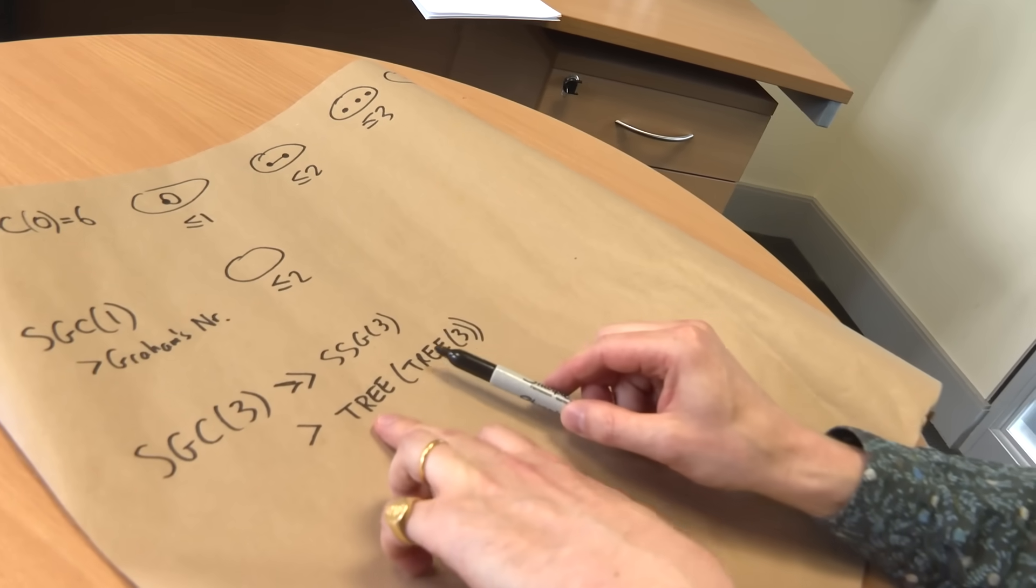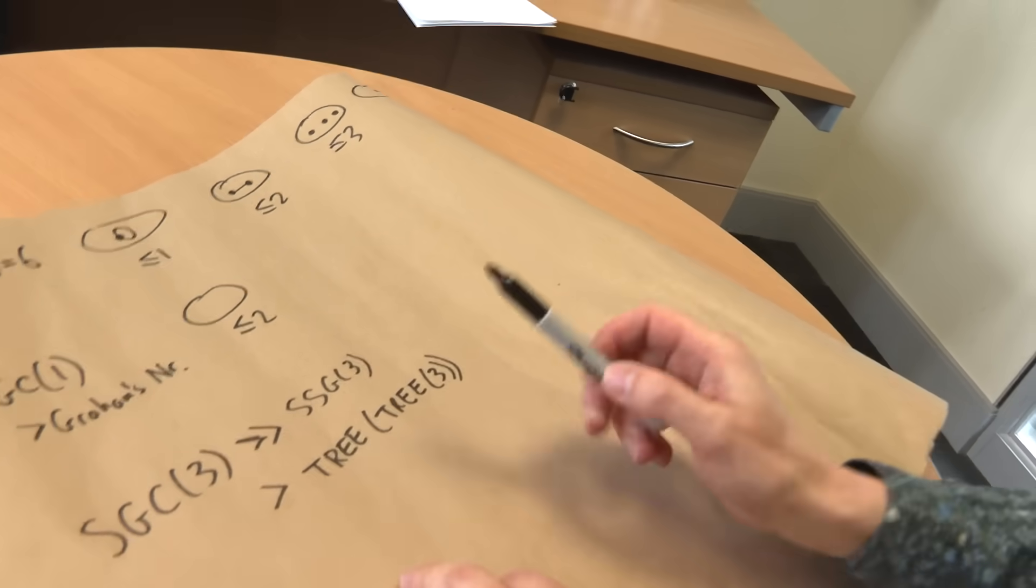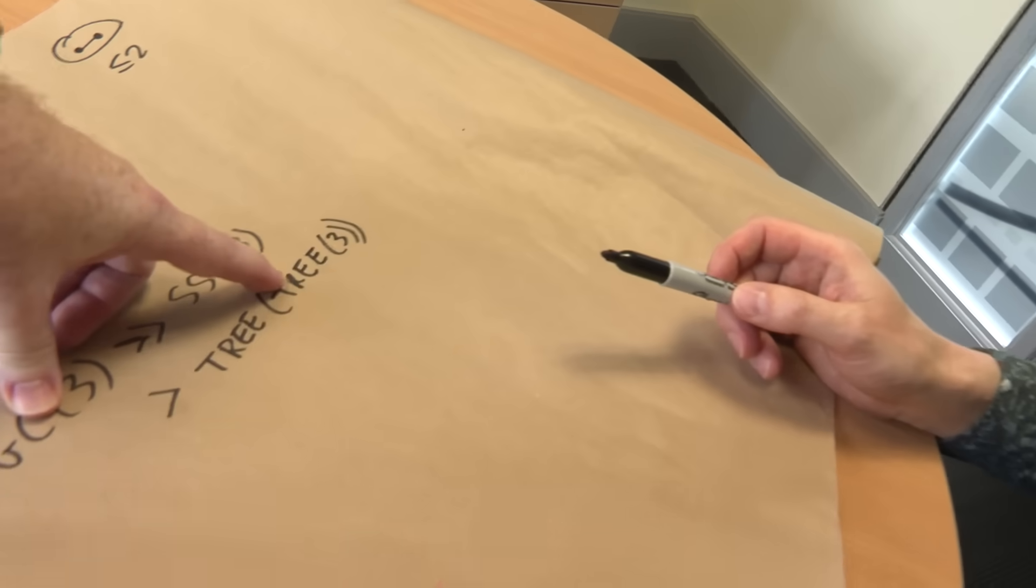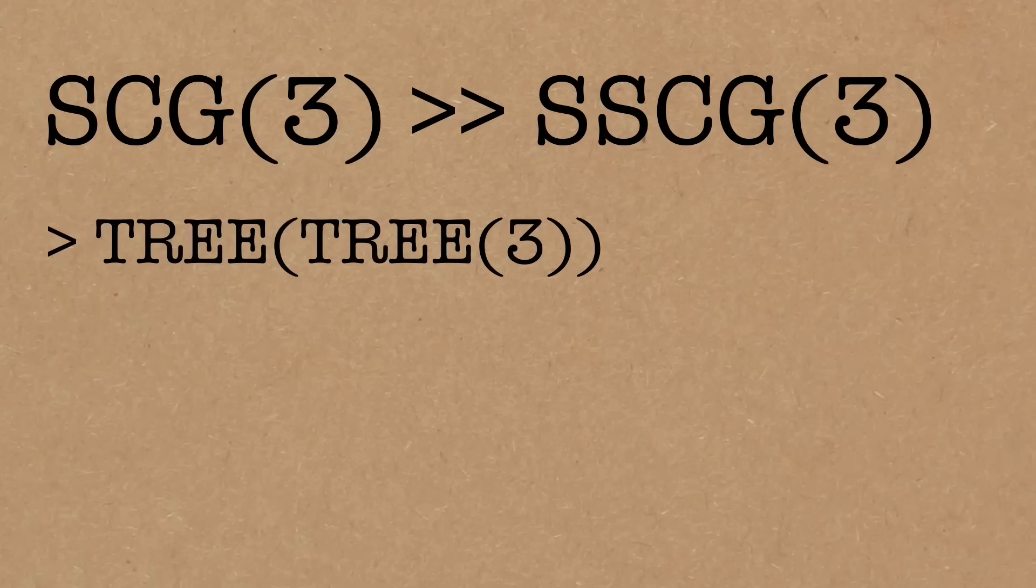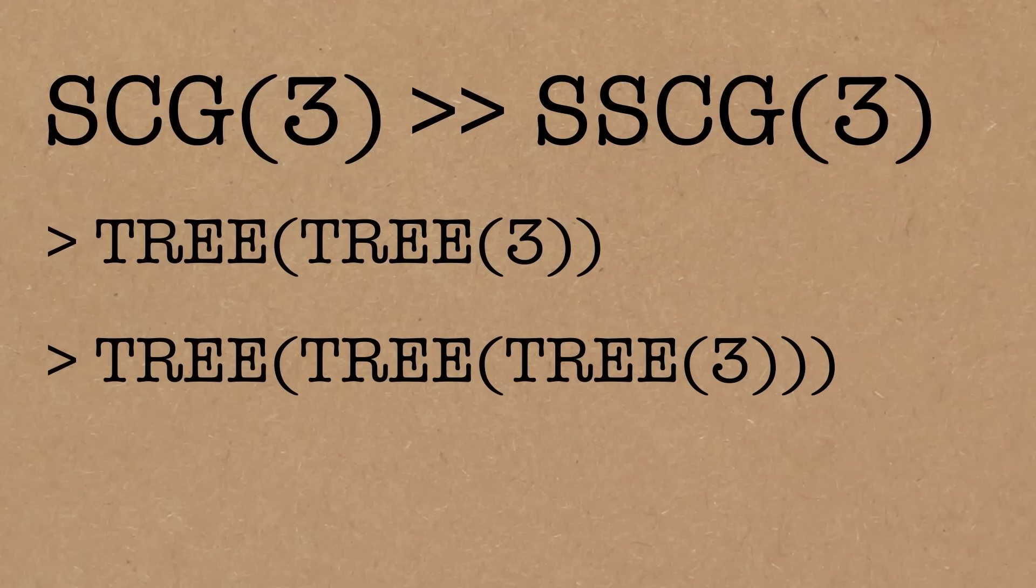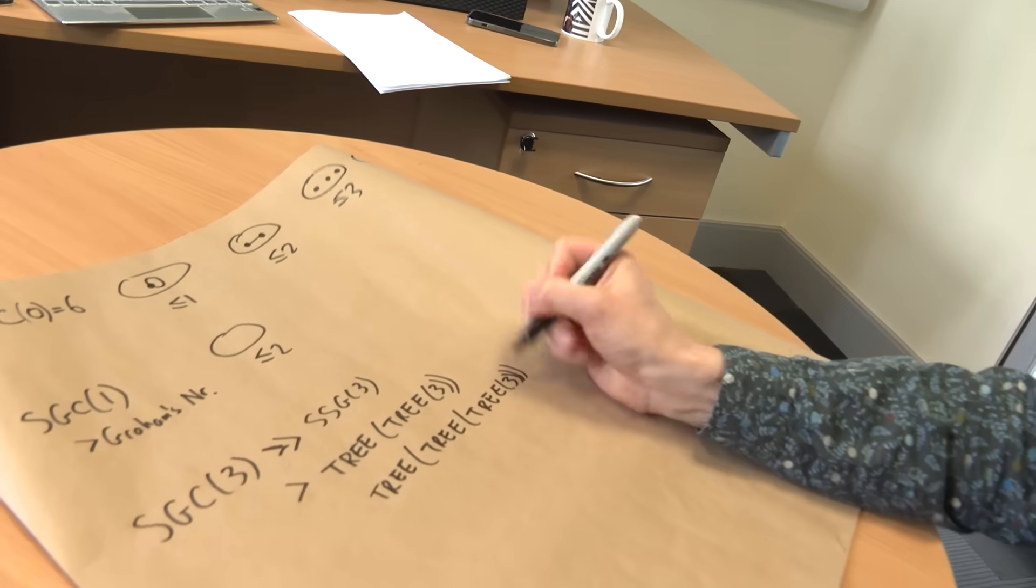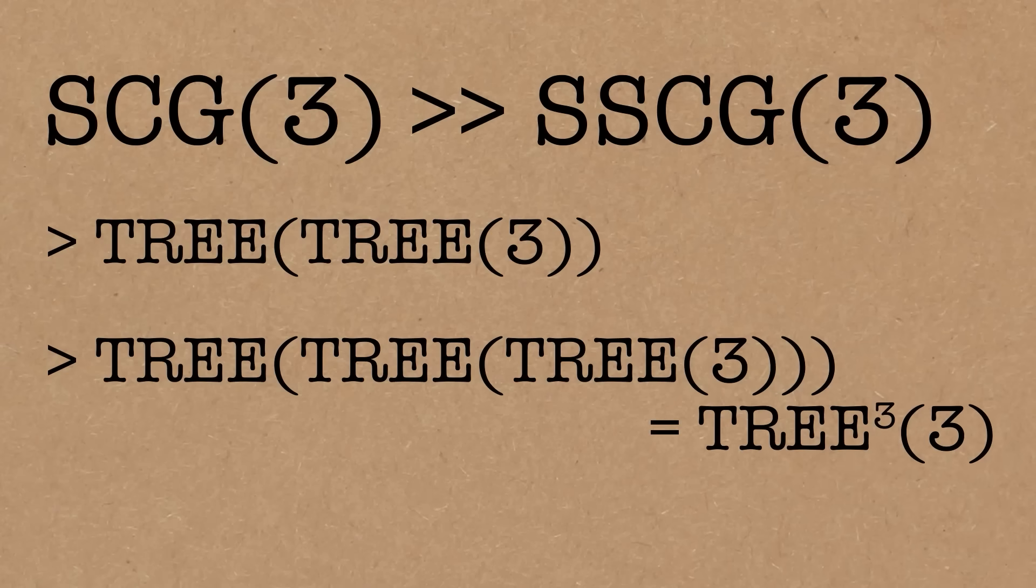So the little number sitting next to the tree here happens to be tree 3. Yeah, yeah, and actually we can keep going, it's actually bigger than tree of that. Is it? It is, yeah. How many times do you think we can do it? You always catch me out here. Tree 3 times? Oh, good guess! You can, you can. So we could write this one as tree cubed 3, yeah. And this number here is actually bigger than tree 3 of 3. This is all based on Adam Goucher's work.